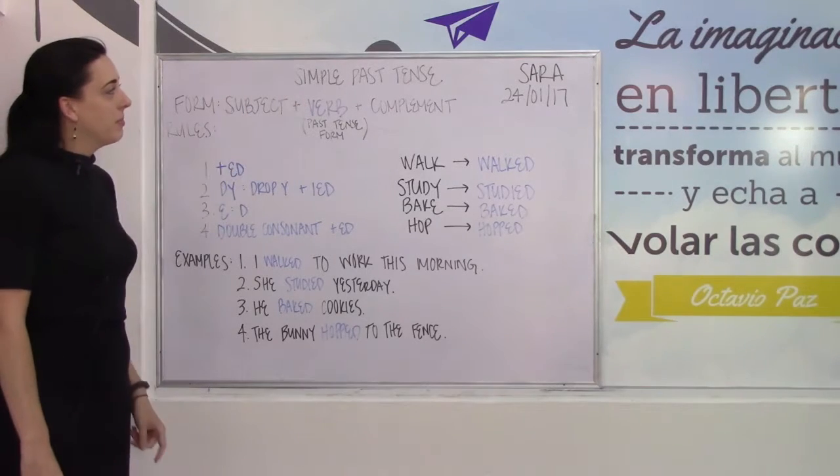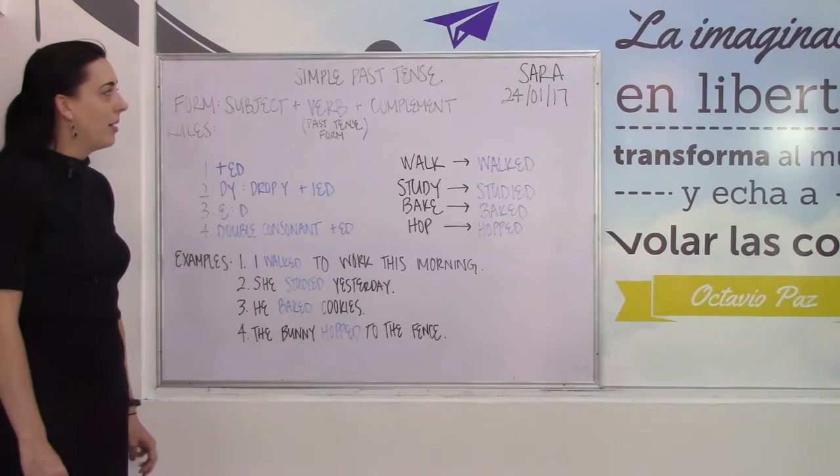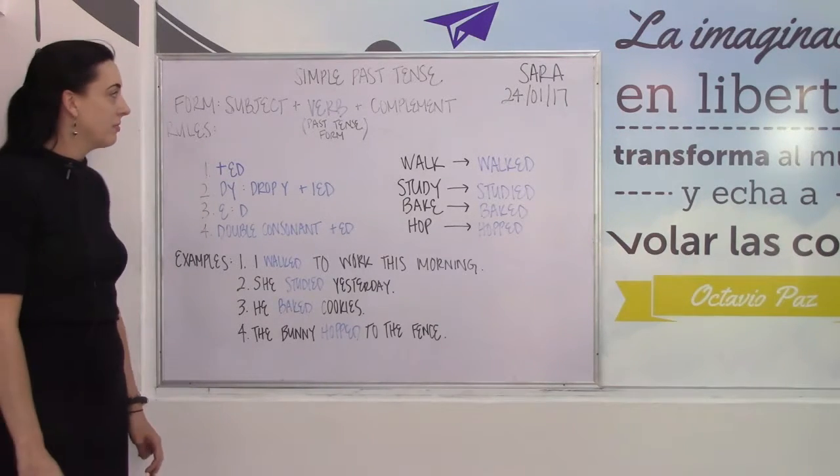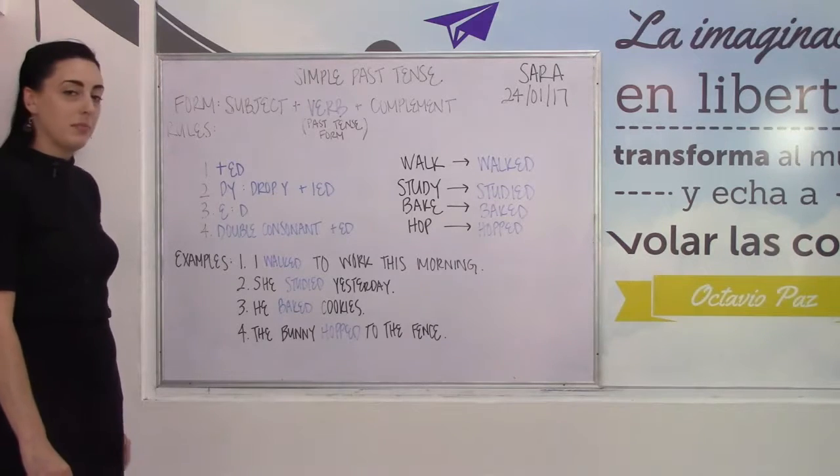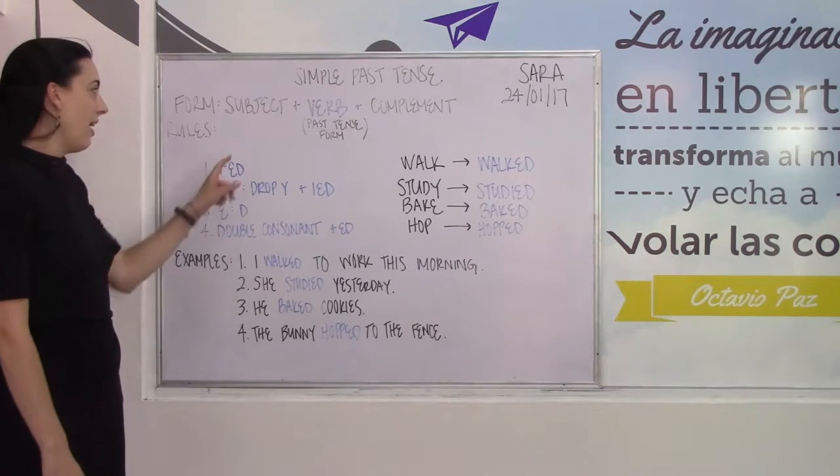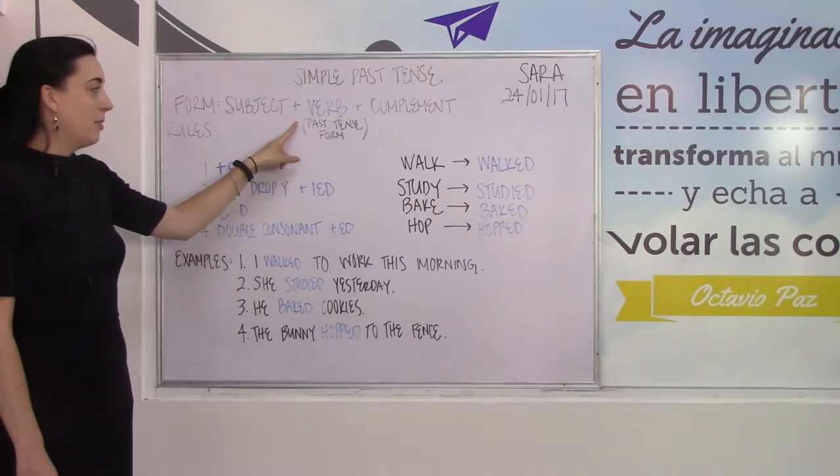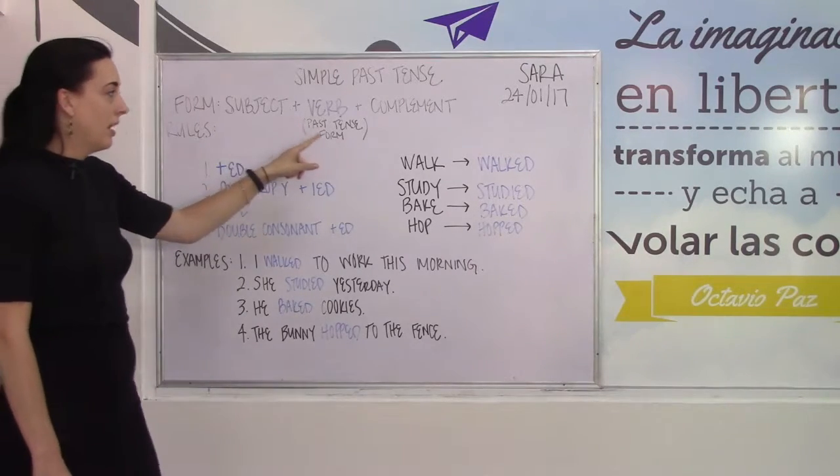We use simple past tense when we want to talk about an action or an idea that has happened in the past. The form for simple past tense is as simple as our subject plus our verb in the past tense form and our complement.